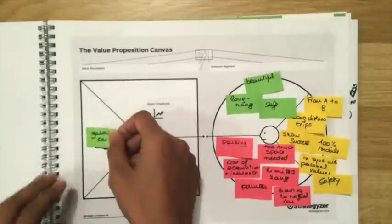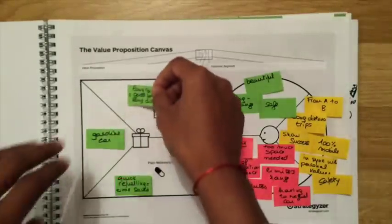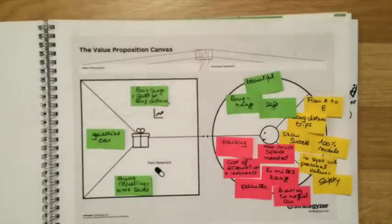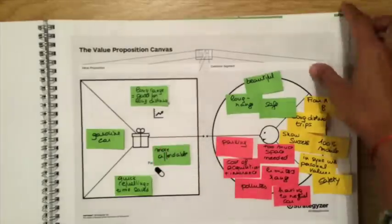Now, let's have a look at the gasoline car. The quick refueling helps you get on the road as fast as possible, and the average range of gasoline cars is around 300 miles. So that's really convenient for long distance trips. Finally, gasoline cars are the most affordable cars that you can get on the market.